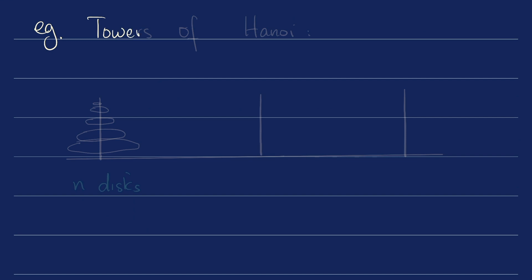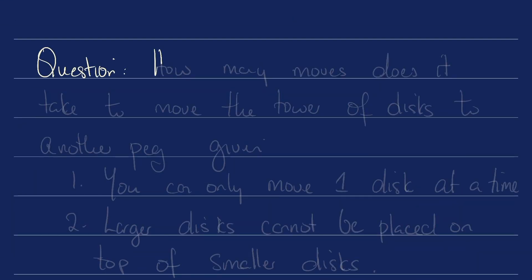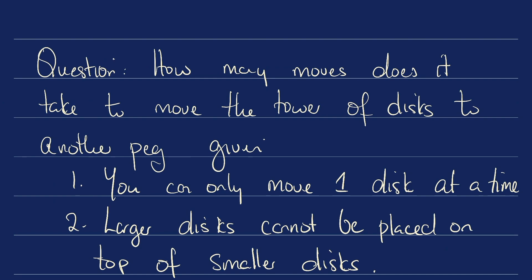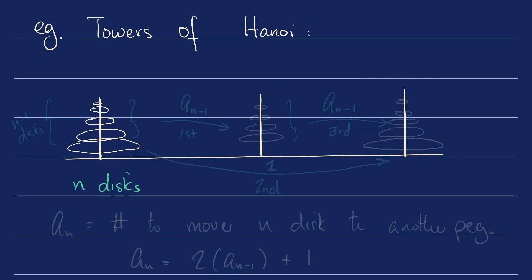Example. Towers of Hanoi. So suppose we've got this set up. We've got three pegs and we've got smaller and smaller disks stacked on this peg. Here's the question. How many moves does it take to move the tower of disks to another peg, given one, you can only move one disk at a time, and two, larger disks cannot be placed on top of smaller disks?